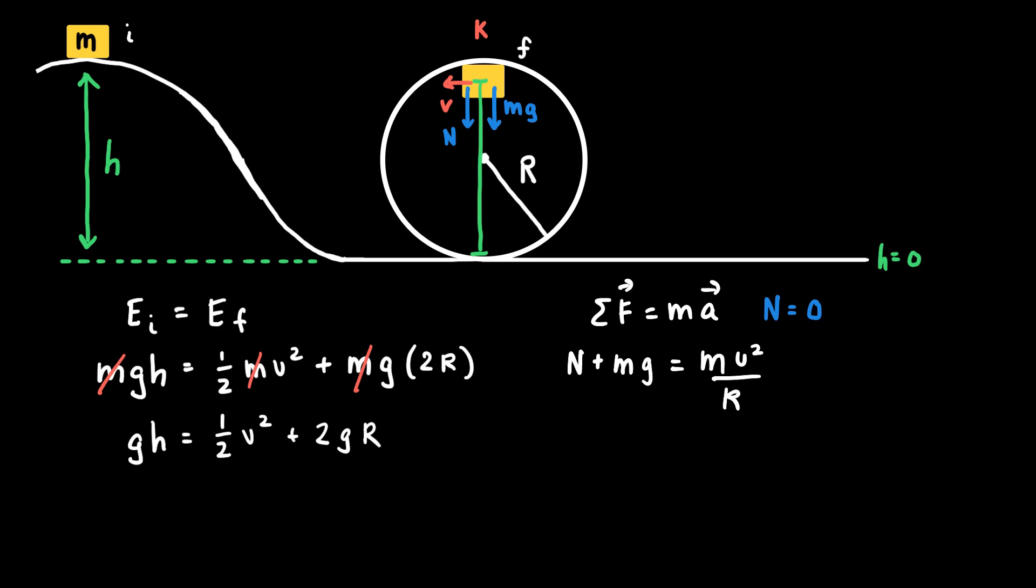And if I modify the equation to make N equals zero, I get mg equals mv squared over r, where I'll see that the mass on both sides of the equation cancel. And I see that the speed, the minimum speed, such that the normal force becomes zero at the top of the ramp, would be equal to the square root of gr.